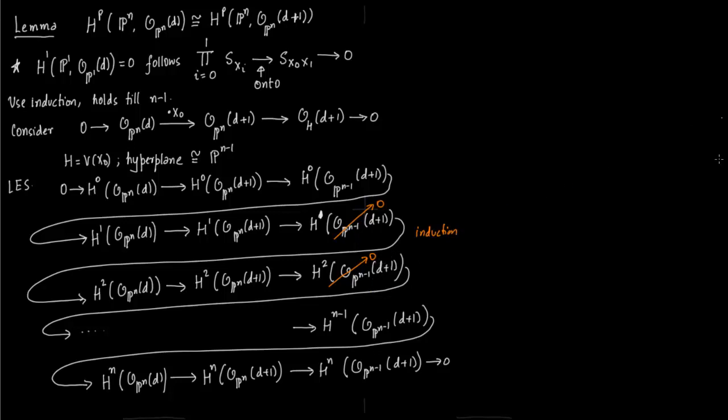So because of these being zero we have the following isomorphisms. So we have H^2(O_P^N(d)) is isomorphic to H^2(O_P^N(d+1)), then H^3 same, with H^3 same with H^4, H^5, H^6 all the way to H. So we need to show it for H. So our lemma goes from 1 to n-1. So p goes from 1 to n-1. So we have shown cases from 2 to n-2.